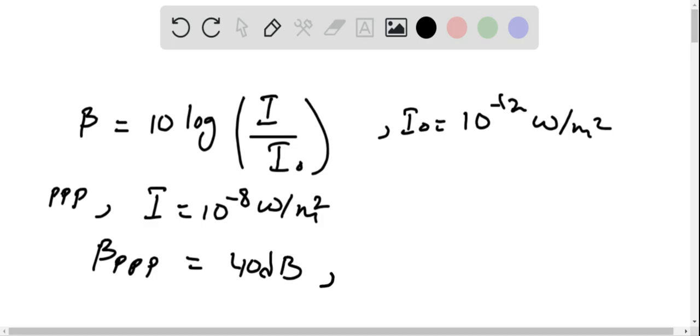Similarly, beta FFF can be calculated by substituting the value for I, which is 10^-2 watts per meter squared, where I₀ remains the same at 10^-12 watts per meter squared. Beta FFF is 100 decibels.